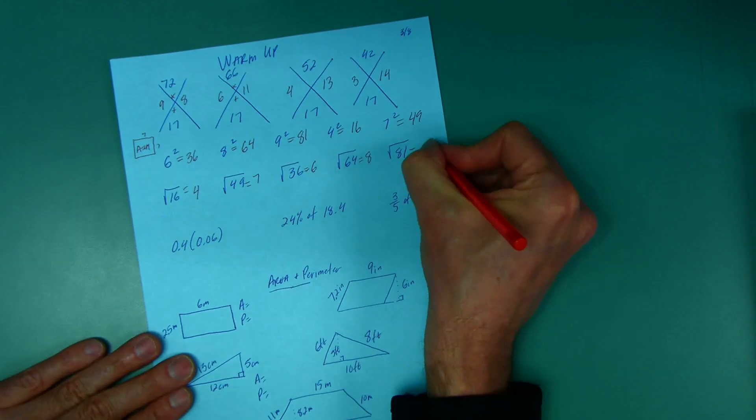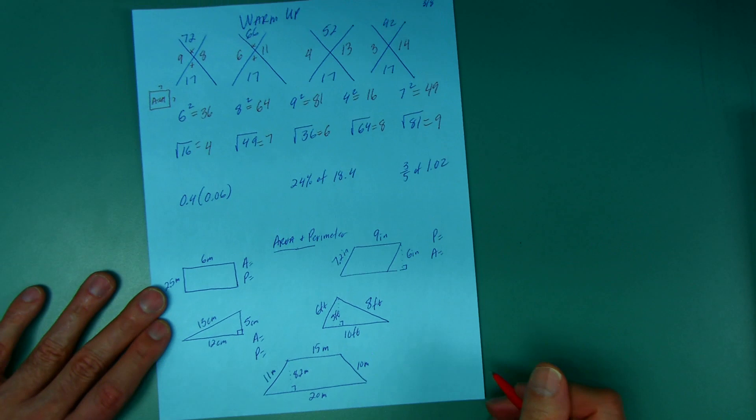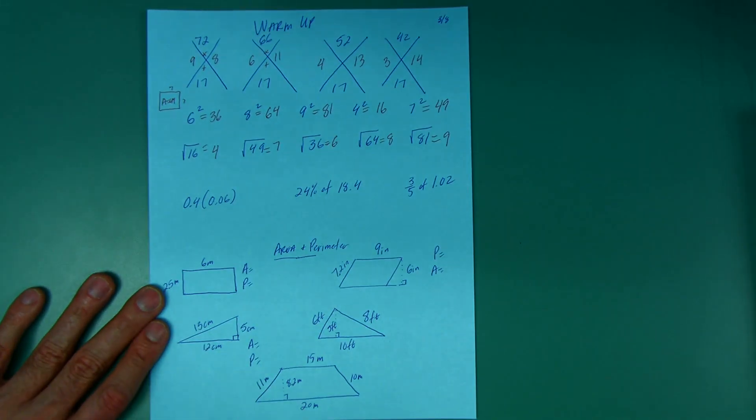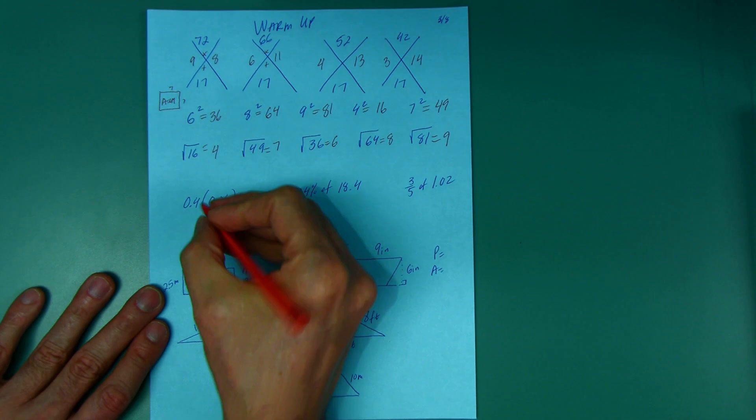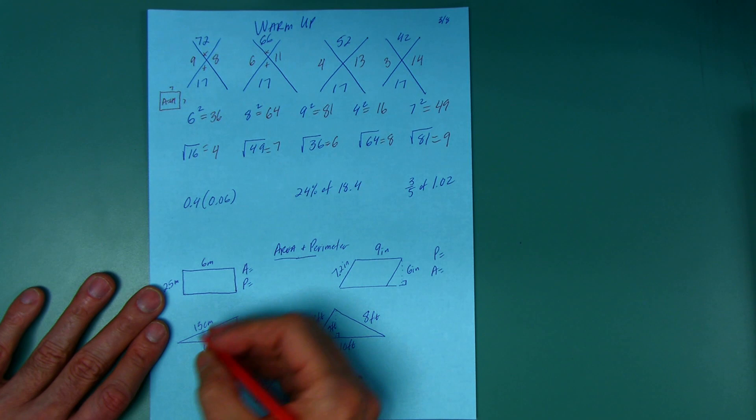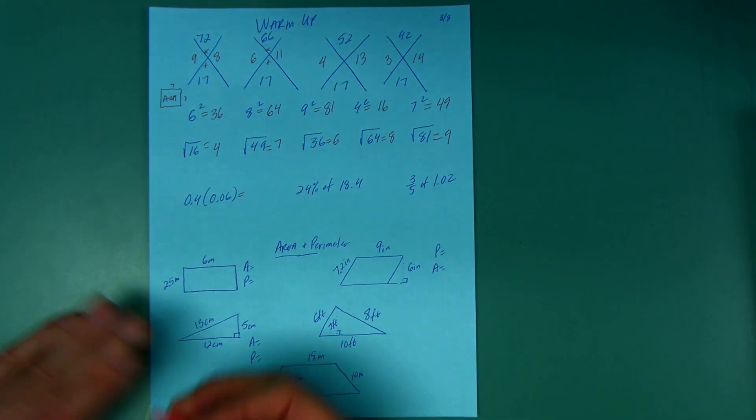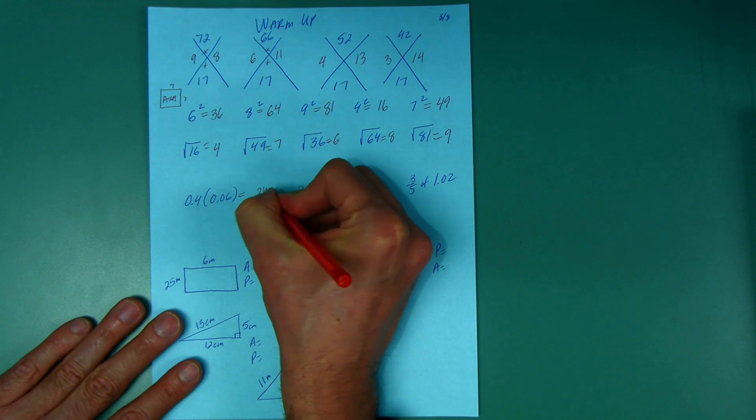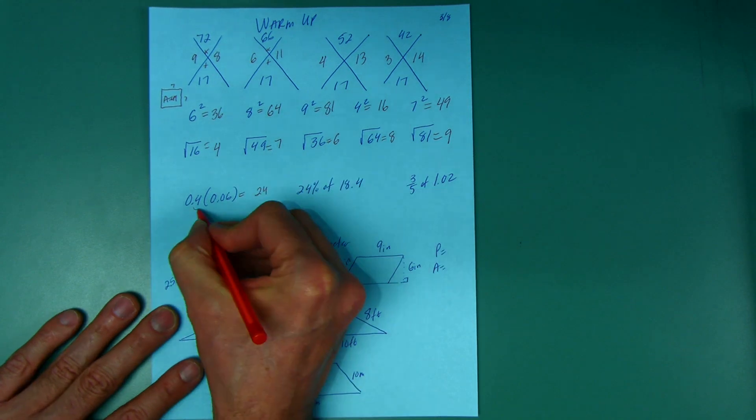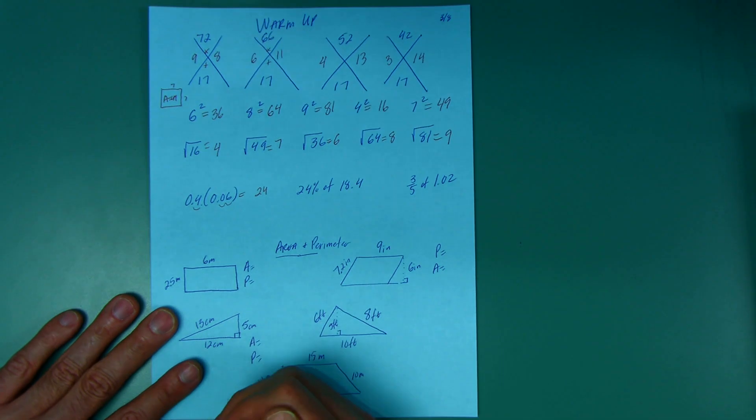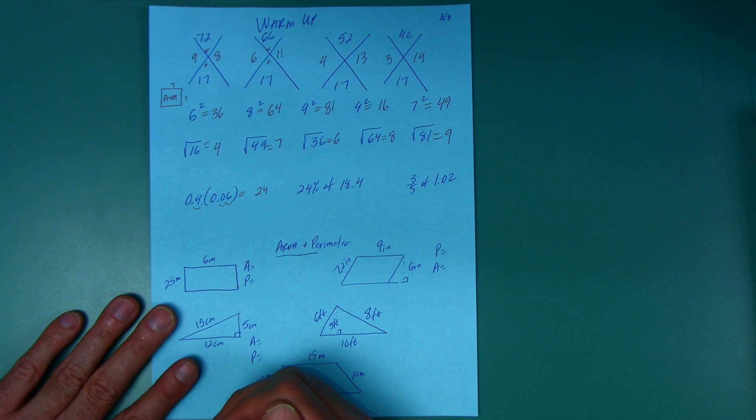What am I doing here? There's nothing written between that 4 tenths and 6 hundredths. Remember, there's nothing written in between a number and parentheses, you're supposed to multiply. So what am I doing here? 4 times 6 is what I do, that makes it easy. But then again, to pretend this was a 4, I had to move the decimal over 1 spot. To pretend this was a 6, I had to move this decimal over 2 spots. That's 3 spots I had to move decimals over to the right in my problem, so I'm going to go back 3 spots in the answer - 1, 2, 3.